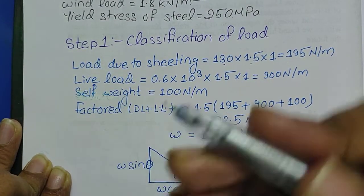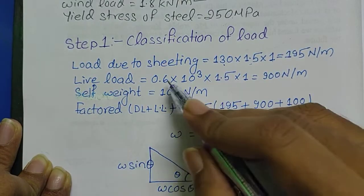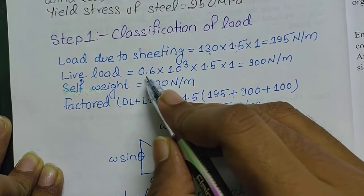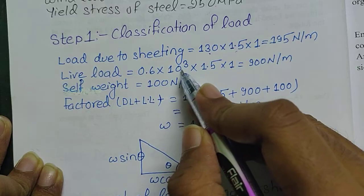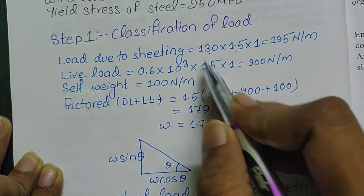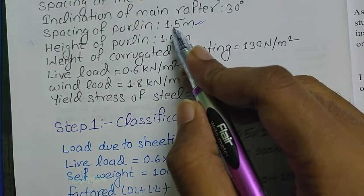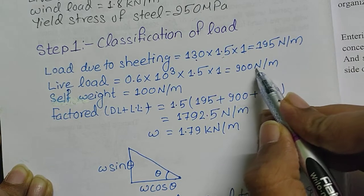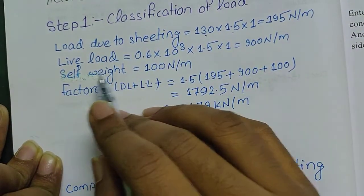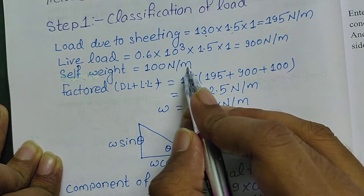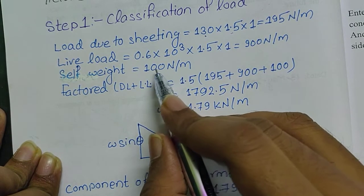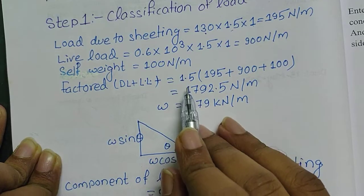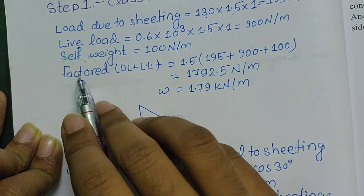Load due to live load will be 0.6 kilo Newton per meter square, so I have converted into Newton per meter square by multiplying with 10 to the power 3. Again it is multiplied with spacing between the purlin which is 1.5, so 1.5 and depth one, so it will be 900 Newton per meter. I have considered self-weight of the purlin as 100 Newton per meter. You can consider it between the range of 100 to 125 Newton per meter.